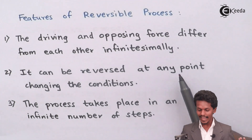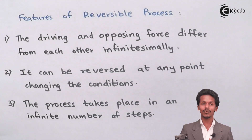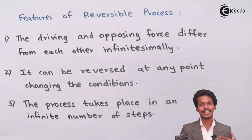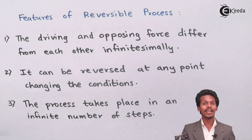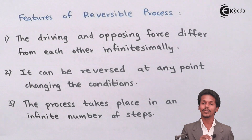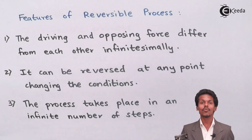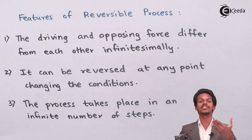The next feature is that the process can be reversed at any point by changing the conditions. Since the driving force and opposing force are almost equal with only a small difference, if I increase a small force on the driving side, the process goes forward. If I apply that small force to the opposing force instead, a reverse process is observed. So the overall process can be reversed at any time just by changing the conditions.